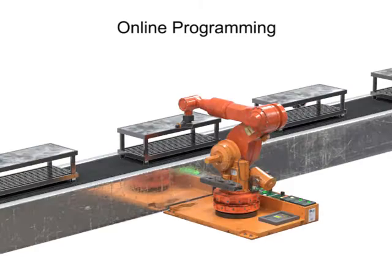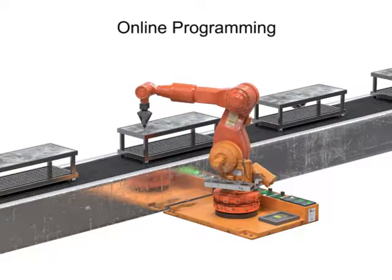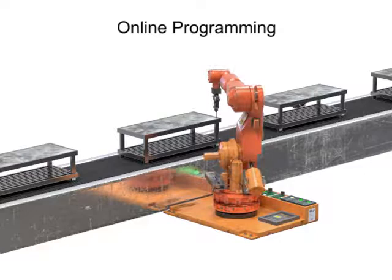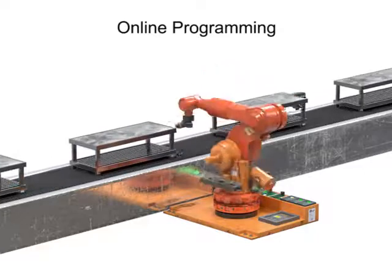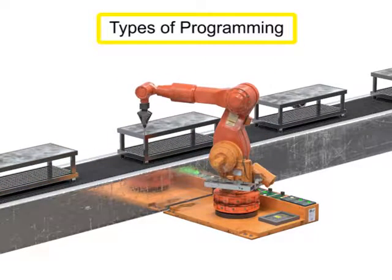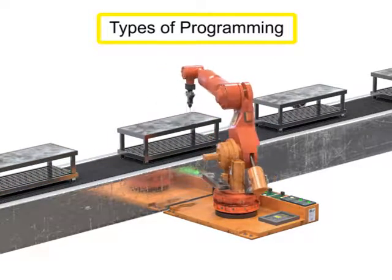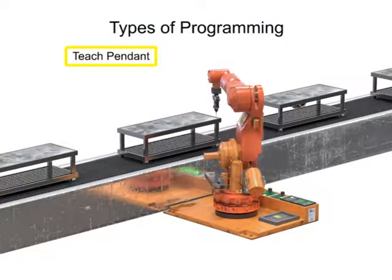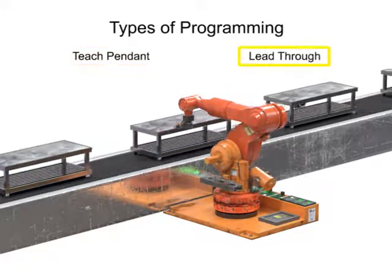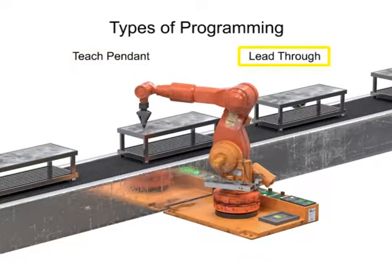Online programming occurs when the robot is online or in an operational mode. The two types of programming we will discuss here are teach pendant programming and lead-through programming.